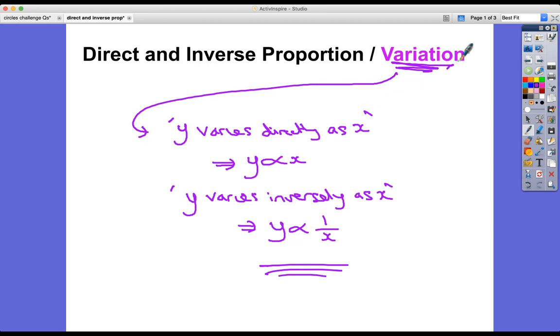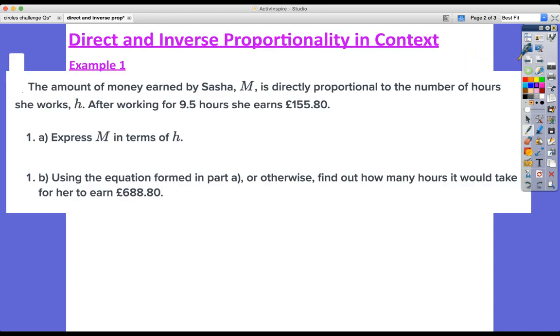So on to today. Today we're going to be looking at direct and inverse proportionality in context, so some real life situations in which we can solve problems using our skills of proportionality. Example one: the amount of money earned by Sasha, M, is directly proportional to the number of hours she works, h. After working for 9.5 hours she earns £155.80.